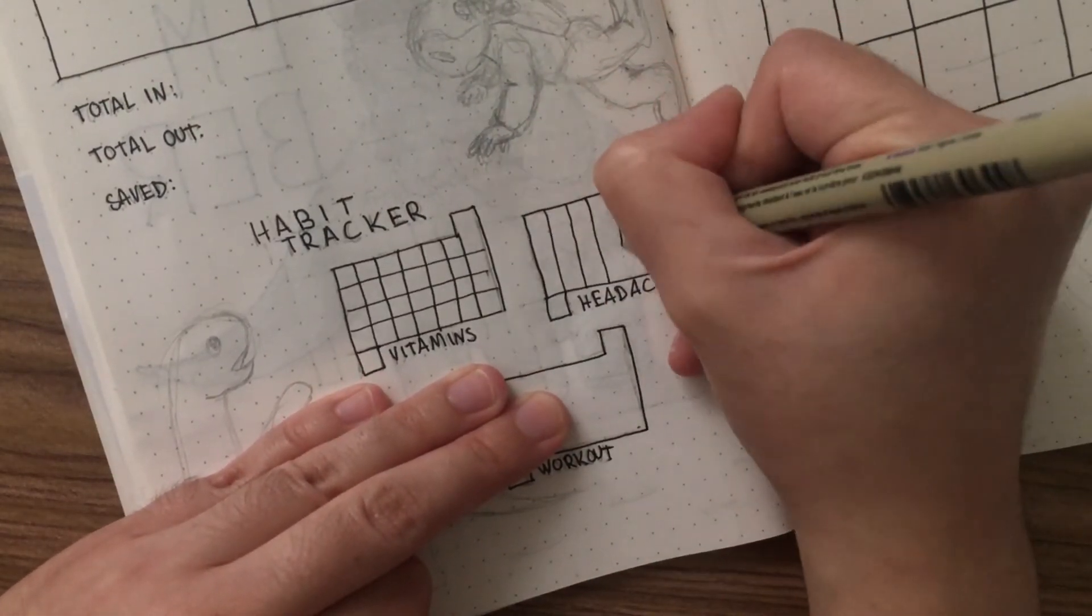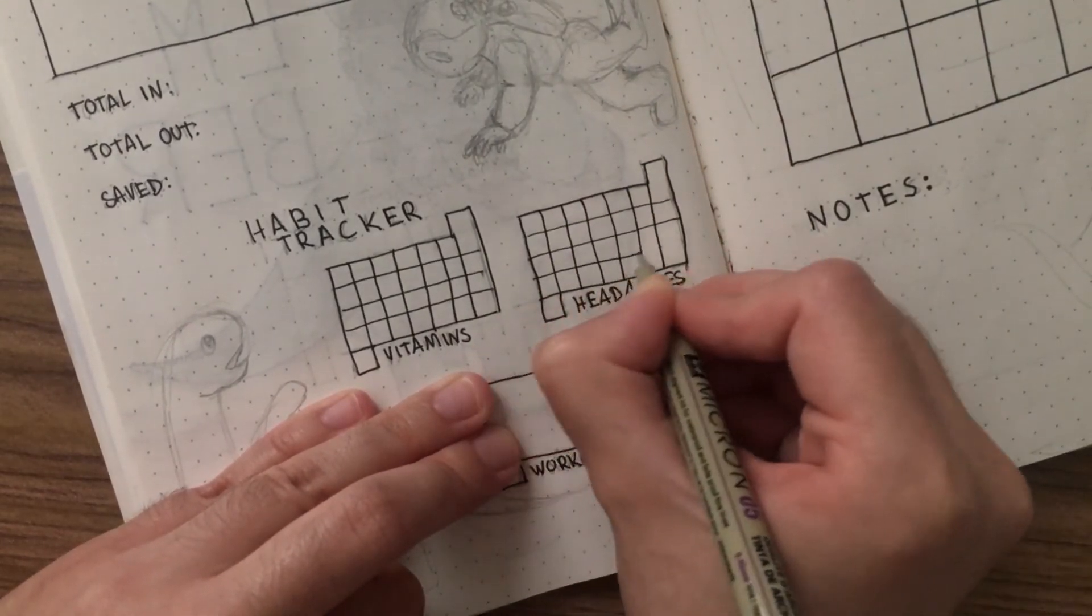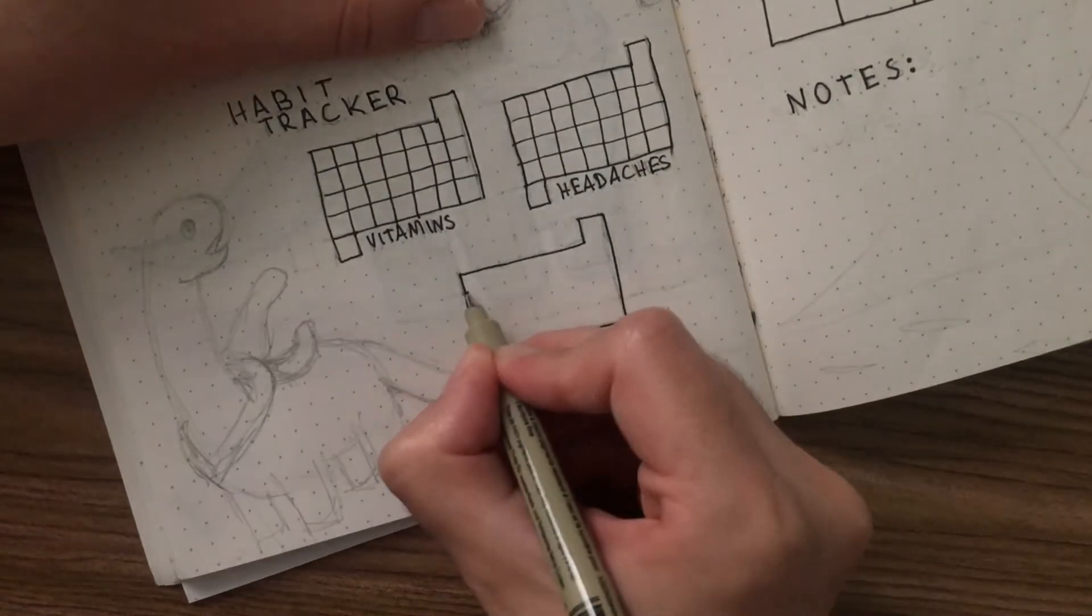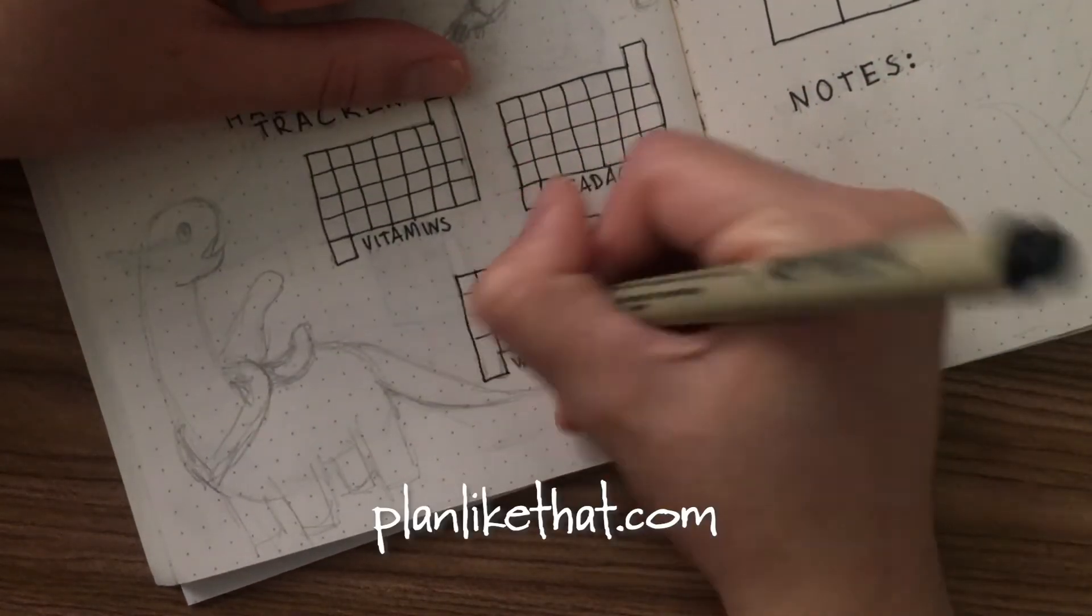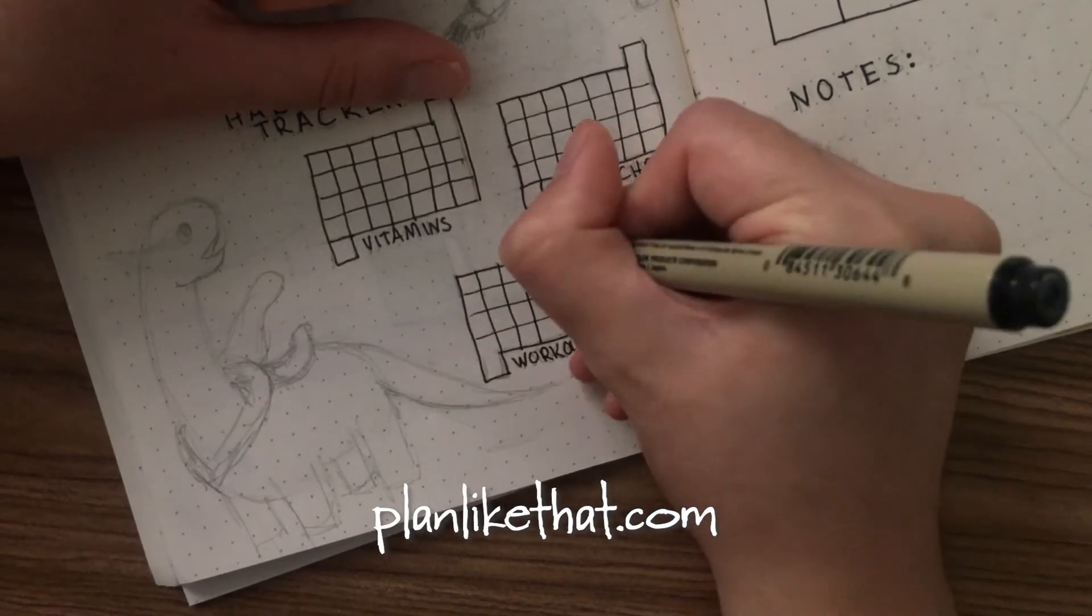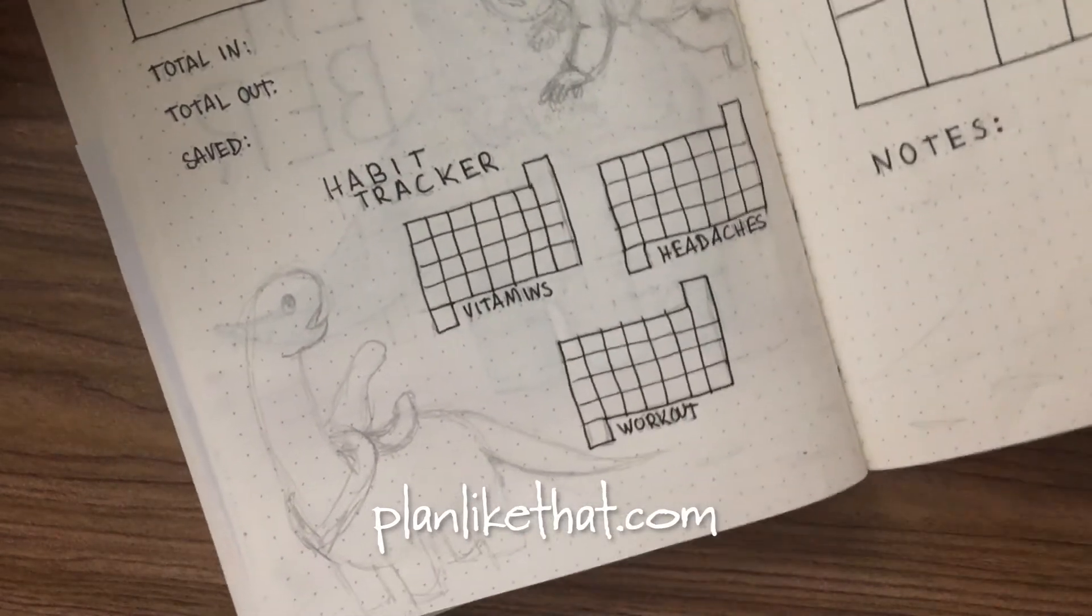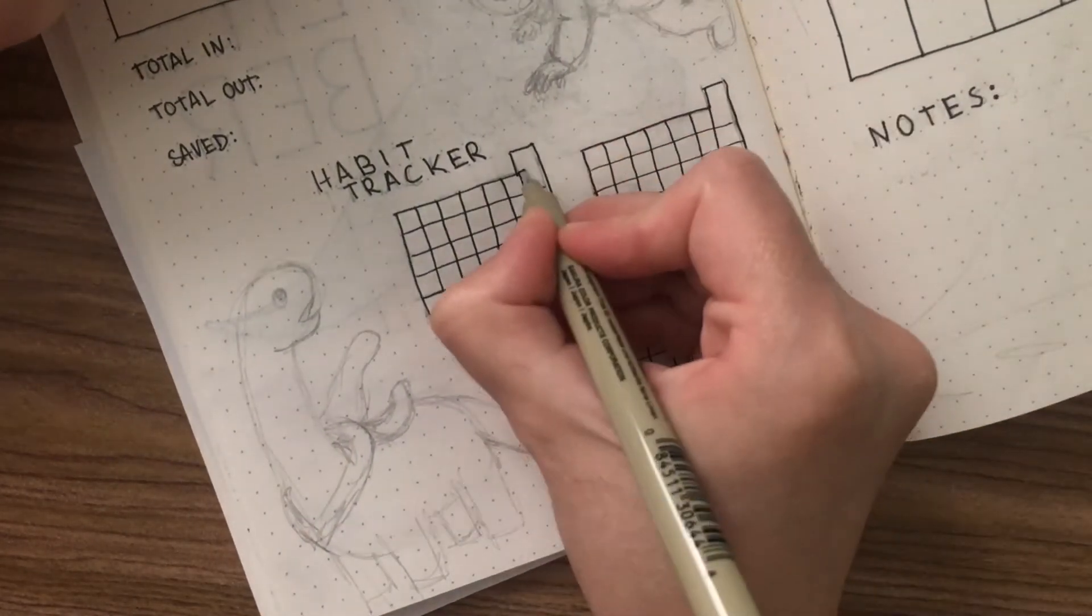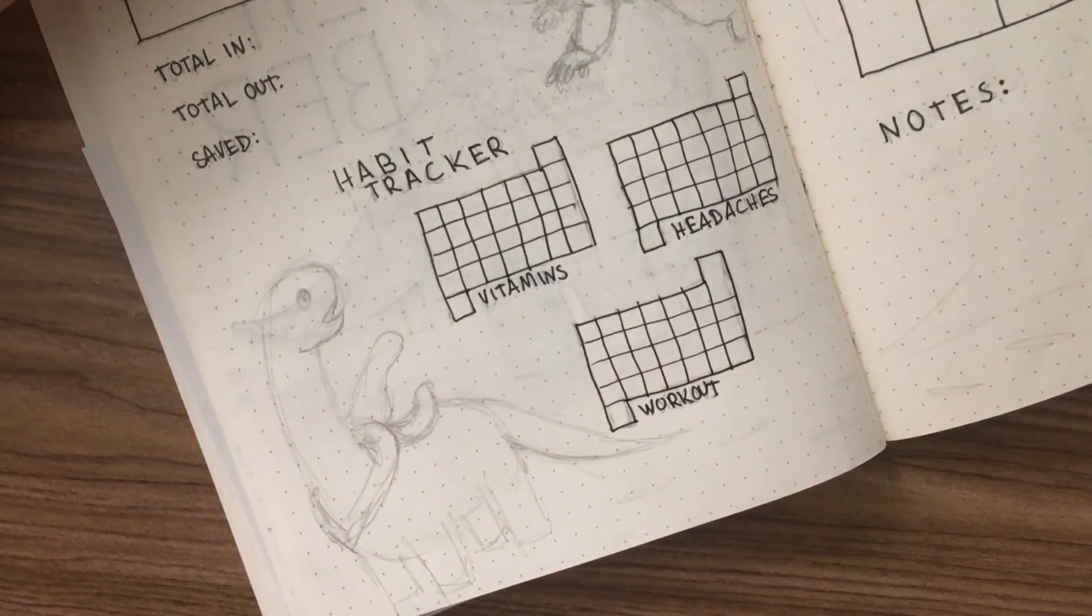So there's the habit trackers, and there's my dinosaur, and there's my astronaut. By the way, if you like dinosaurs much like I do, then feel free to check out my Etsy store at Plan Like That dot com where I do be posting dinosaur stickers every once in a while. Why am I speaking in an accent? I'm so sorry. But yeah, there's the habit trackers.